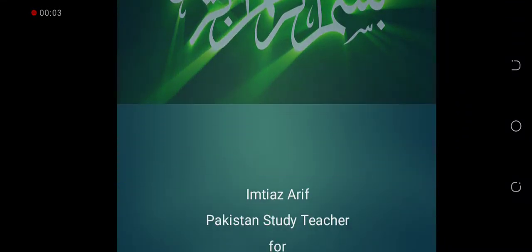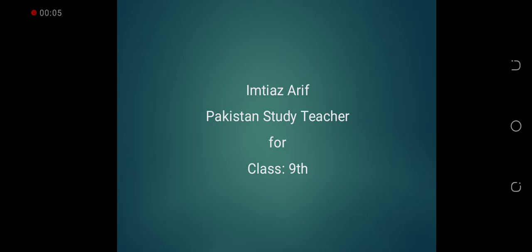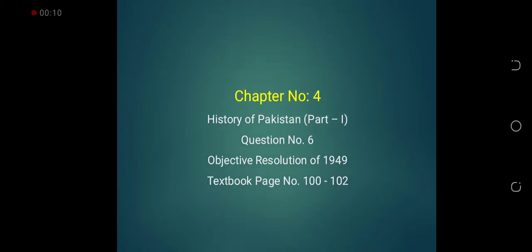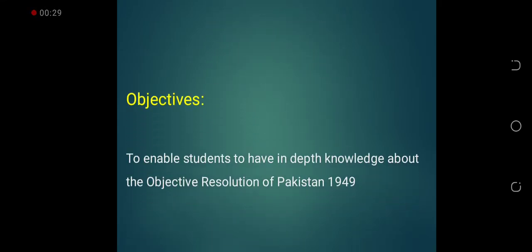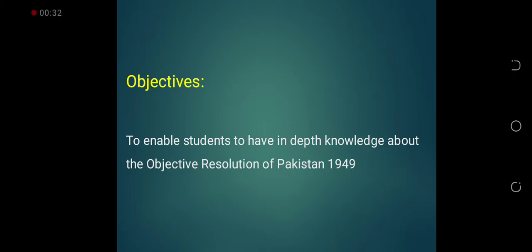Bismillahir rahmanir raheem. As-salamu alaykum everyone. Imtiyah Zarif here, your Pakistani Studies teacher for class 9. Today we discuss chapter number 4, question number 6, which is about the Objective Resolution of 1949. The contents of this topic are available on pages 100-102 of your book. The basic objective of this discussion is to provide you in-depth knowledge about the Objective Resolution of Pakistan 1949.